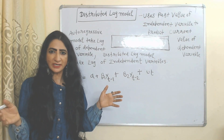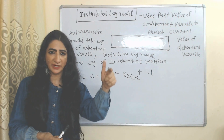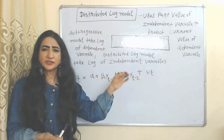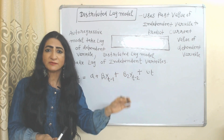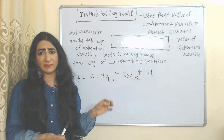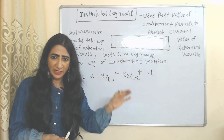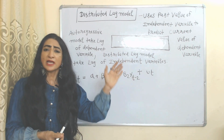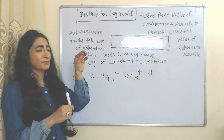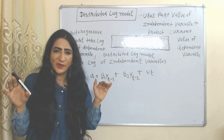Now we are going to talk about the distributed lag model. While the autoregressive model predicts the current value of the dependent variable based on past values of the dependent variable, the distributed lag model predicts the current value of the dependent variable based on past values of the independent variable. So the distributed lag model uses past values of the independent variable to predict the current value of the dependent variable.